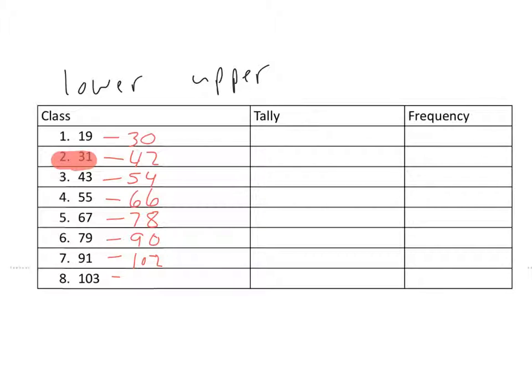I'm going to take my width, which is 12, I'm going to subtract 1 from it, it's going to give me 11, and I'm going to add that to my lower limit. So my last lower limit is 103, I'm going to add 11 to it, and I'm going to get 114. So my last upper limit is 114. Now I've got all my classes and the ranges for each class.